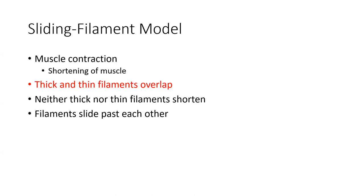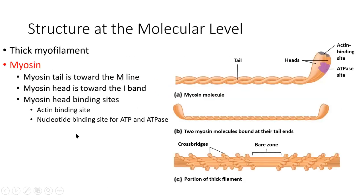Early physiologists used to think there was actual contraction of the filaments themselves. As we looked at this further with the development of the microscope and better understanding of muscle, we realized that neither filament actually shortens itself. What's happening is the thick filament is dragging the thin filament — and that is what we call the sliding filament model. This theory suggests the thick filament latches onto the thin filament and drags it closer to the M lines, which are the center of the sarcomere, bringing about shortening of the entire sarcomere.